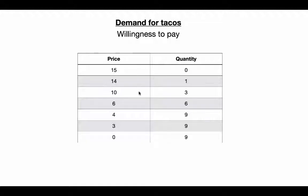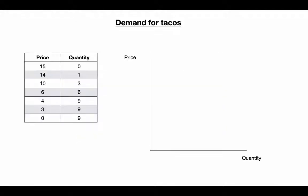So this now becomes our demand schedule for this good, and once I plot this, it's going to become a demand curve. Now, at first, I'm going to assume, just like in this example, we're only allowing discrete units. So you can only have one taco or two tacos rather than 1.5.